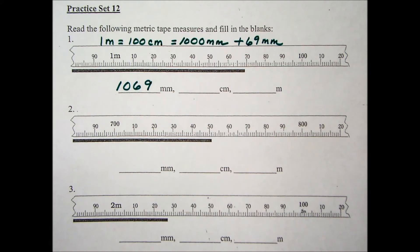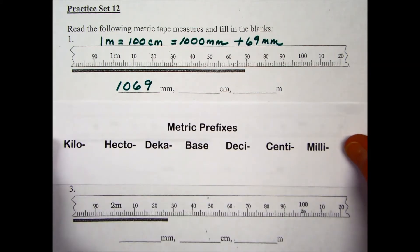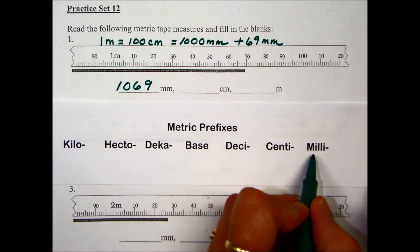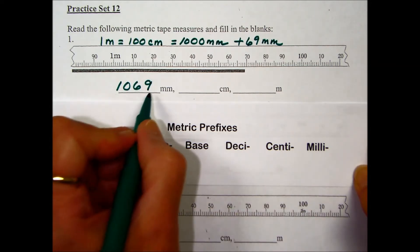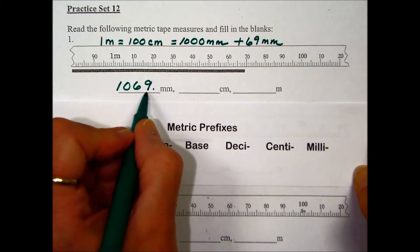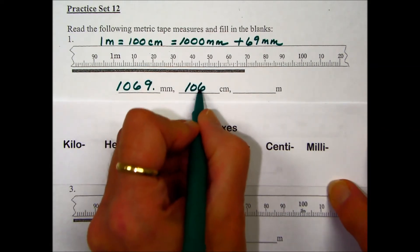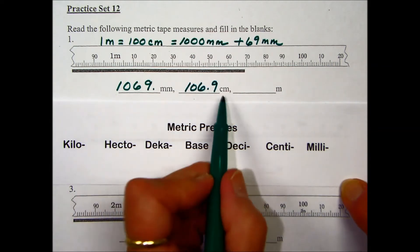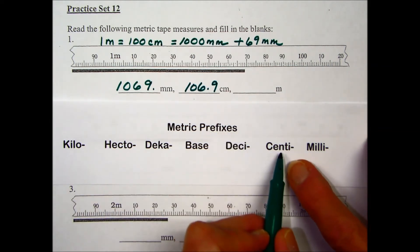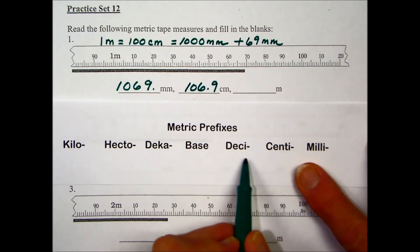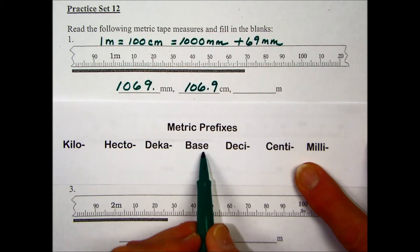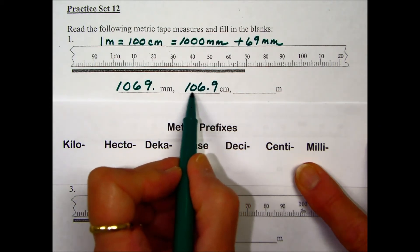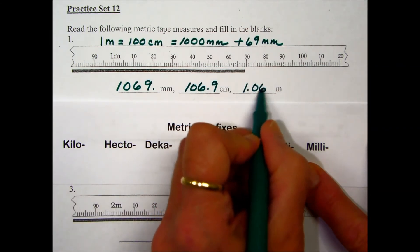They're asking us to convert that into equivalent centimeters and meters. From millimeters to centimeters, we move the decimal place one to the left, giving us 106.9 centimeters. Then converting centimeters to meters, we move the decimal two places to the left, giving a value of 1.069 meters.